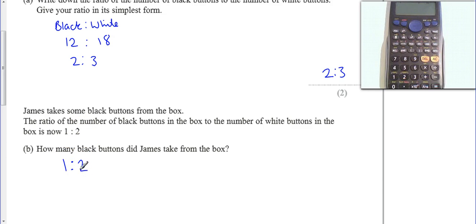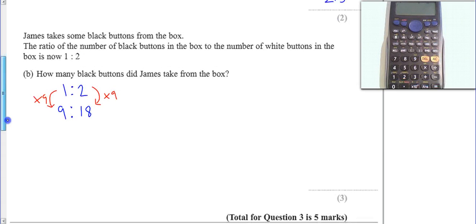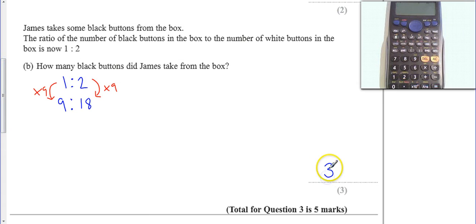So there's still 18 white here. So that means if I times by 9 here, then this must be 9. So there was 12 black buttons, now there's only 9, so he must have taken 3.